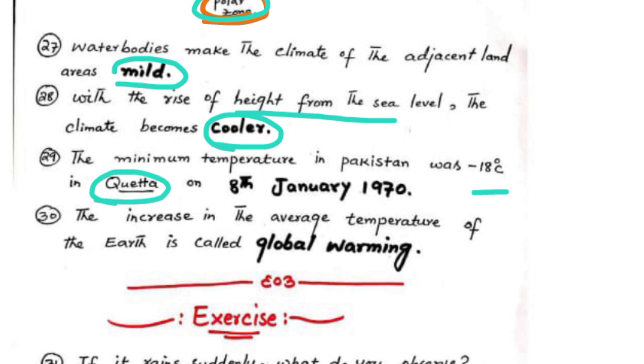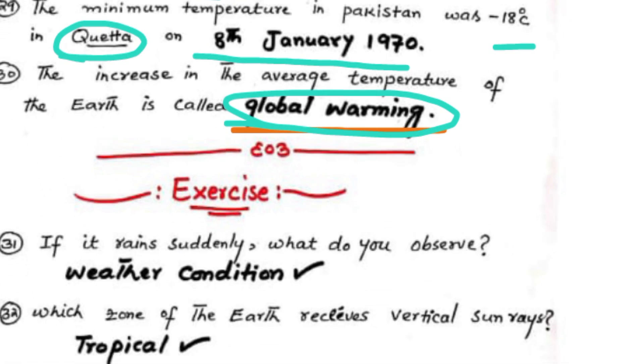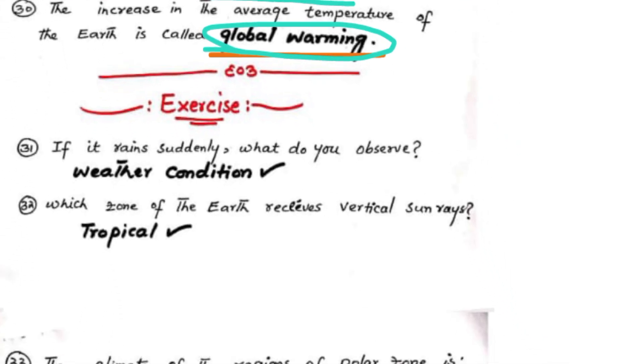The increase in the average temperature of the Earth is called global warming.